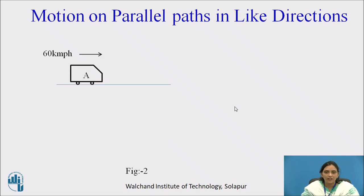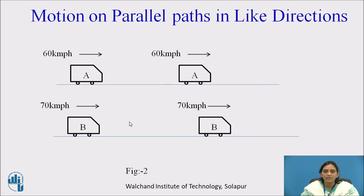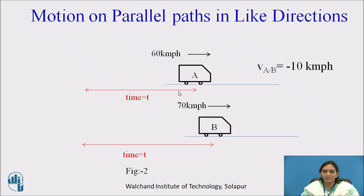In the second case, increase the speed of car B — keep it a little faster than car A. Let the speed of car A be 60 kilometers per hour and the velocity of car B be 70 kilometers per hour. After time t, car B will cover some distance more than car A. The observer in car A will think that car B is moving with a very slow speed of 10 kilometers per hour, and the observer in car B will think that car A is moving in a reverse direction — so according to B, the velocity of A is minus 10 km/h, and according to A, the velocity of B is 10 km/h.